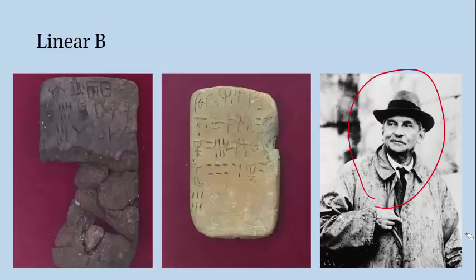But in the 1950s, Linear B was proven to be a system for writing Greek. Now Linear B is not an alphabet, but rather a syllabary. A syllabary is a kind of writing system in which written symbols represent complete syllables, and not just individual phonemes. So instead of having an individual symbol for the sound T, Linear B has different symbols for each syllable that can be formed by combining the T sound with a vowel.